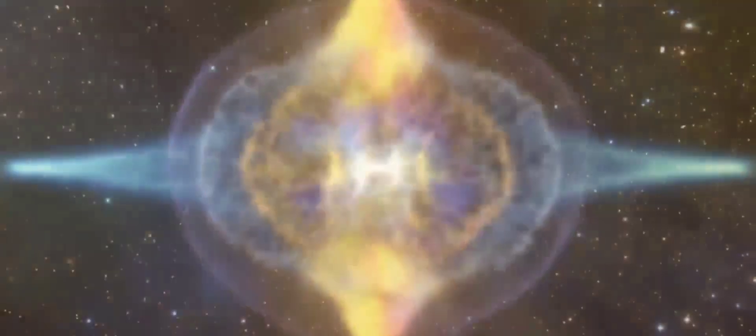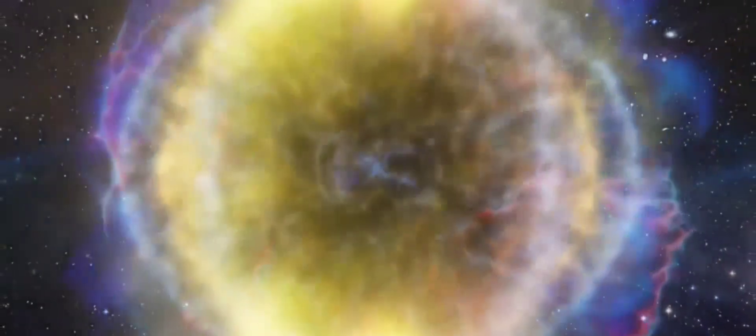When a star has exhausted its internal thermonuclear fuels at the end of its life and gravitational force wins, the core becomes unstable and gravitationally collapses inward upon itself. That is when black holes are formed.